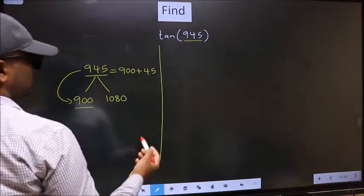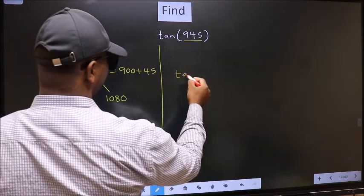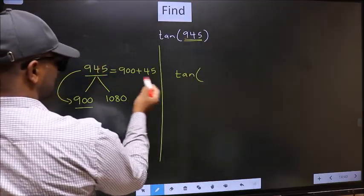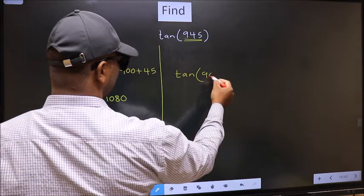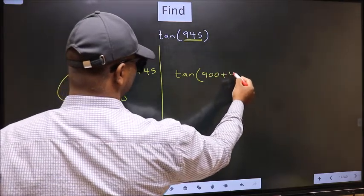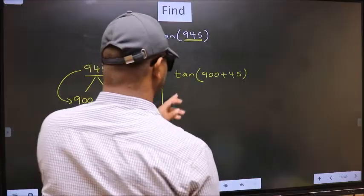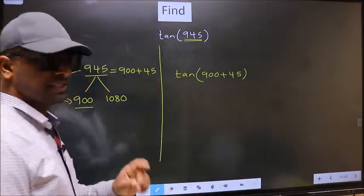So this will become tan. In place of this, we write this: 900 plus 45. This is your step 1.